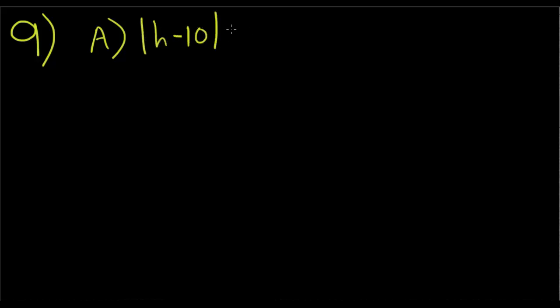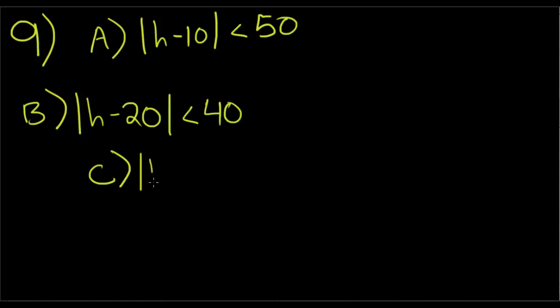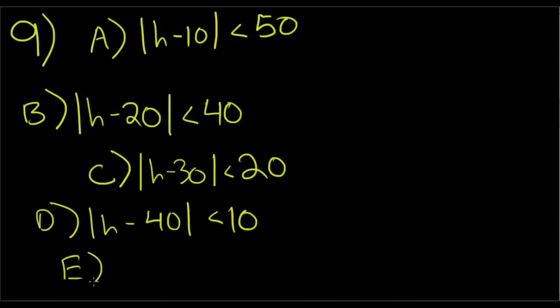So, the absolute value of h minus 10 is less than 50. Choice B is the absolute value of h minus 20 is less than 40. Then C, the absolute value of h minus 30 is less than 20. And then D, the absolute value of h minus 40 is less than 10, and E, the absolute value of h minus 45 is less than 5.